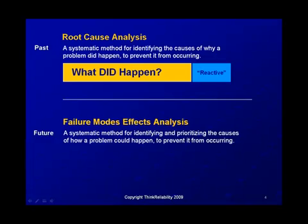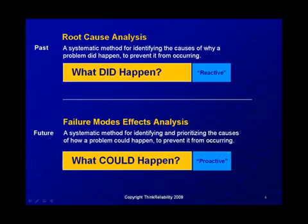Root cause analysis is a systematic method for identifying the causes of why a problem did happen, so you can prevent it from occurring. Failure modes effects analysis is also a systematic approach for identifying and prioritizing the causes of how a problem could happen. The simple distinction is: root cause analysis is typically in the past for something that did happen, and failure modes effects analysis is talking about the future where something could happen.